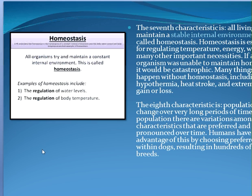The eighth characteristic is that populations change over periods of time. Within our DNA there are certain possibilities, and depending on mating, certain characteristics can be eliminated. Unless through a mutation — which are usually detrimental — we can't add more. We've seen changes like humans getting taller over time. Humans have also taken advantage of this by choosing preferred traits in dogs, resulting in hundreds of different breeds. That's changing of populations.